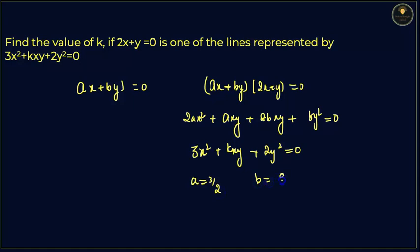Now a plus 2b that can turn out to be k. The value of k that you will write as 3 by 2 plus 4 and that is equal to 11 by 2, and that's the answer that you will get for the value of k.